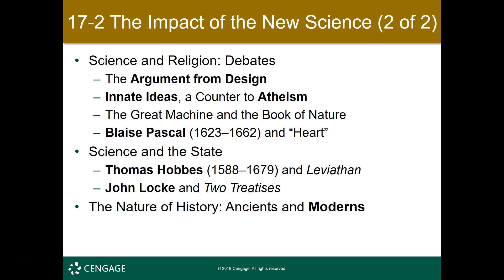What you start seeing in a lot of these Enlightenment thinkers is applying science to us, applying science to our own world. You start seeing science applied to politics and the state. Thomas Hobbes and John Locke give us two competing ideas about government, and both of them are founded on scientific ideas.